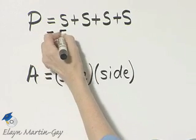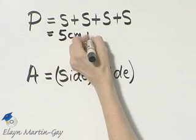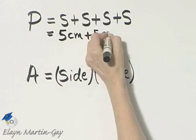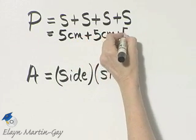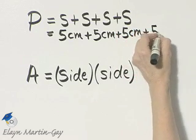Each side measures 5 centimeters. That's short for centimeters. So 5 centimeters, plus 5 centimeters, plus 5 centimeters, and then plus 5 centimeters.